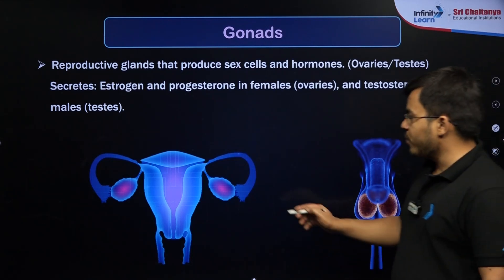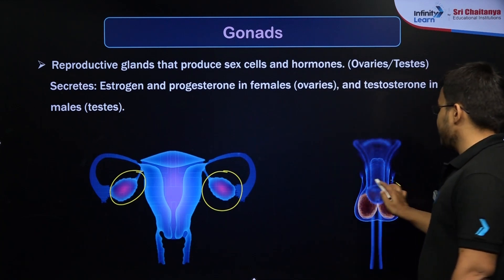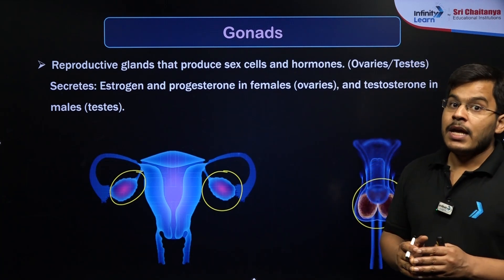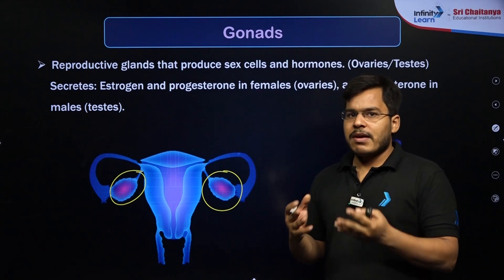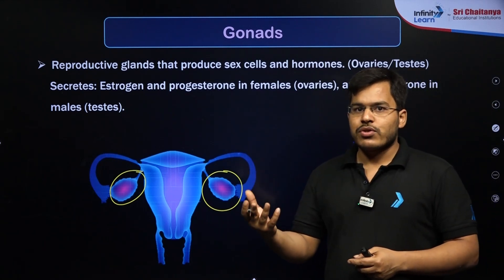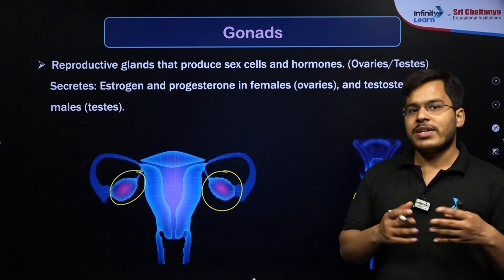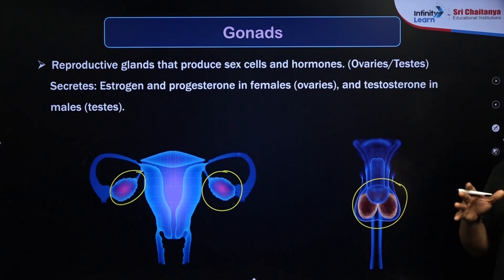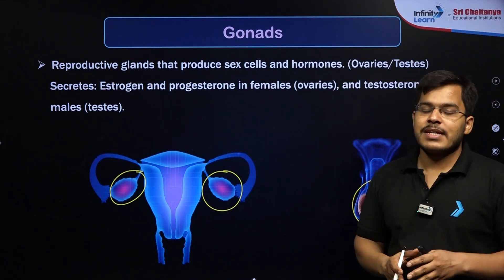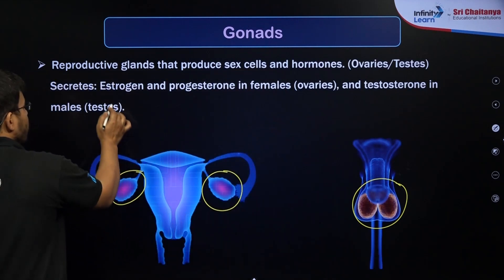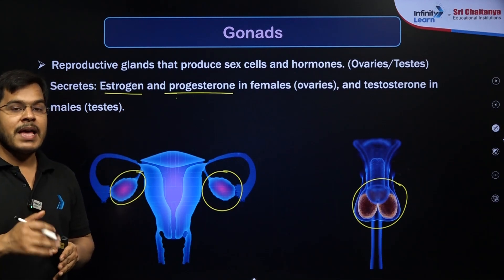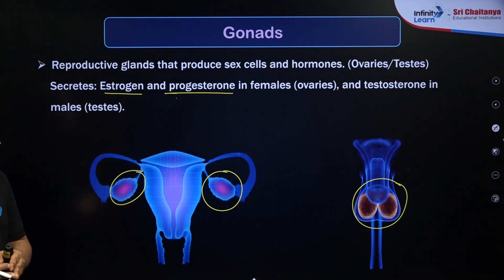Finally, we have the gonads — a pair of ovaries in females and a pair of testes in males. These are the primary sex organs, meaning they release gametes and are related to sexual activity. There are other secondary sexual organs in the body that assist in reproduction but don't release gametes. The ovaries in females release estrogen and progesterone: estrogen gives females their secondary sexual characteristics, and progesterone is the pregnancy hormone that helps during pregnancy.